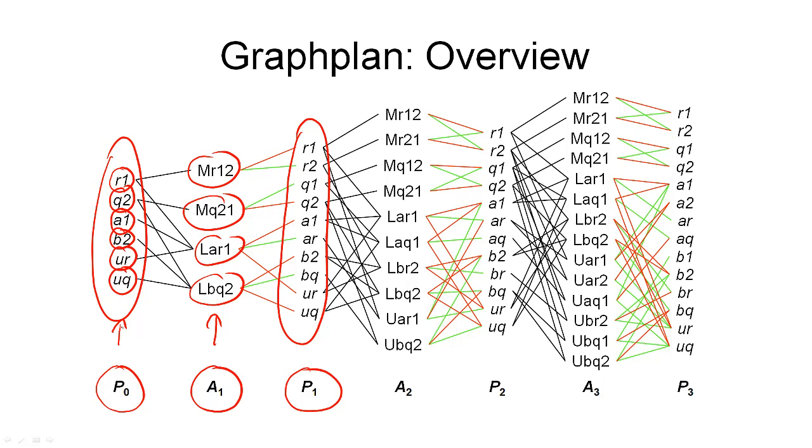The expansion step is then followed by the second step in this algorithm, which is the backward search. So, what we do in the backward search is search for our plan from the last proposition layer in the plan. So, we are searching from this layer here, and we're going backwards towards the initial state until we reach the initial state.